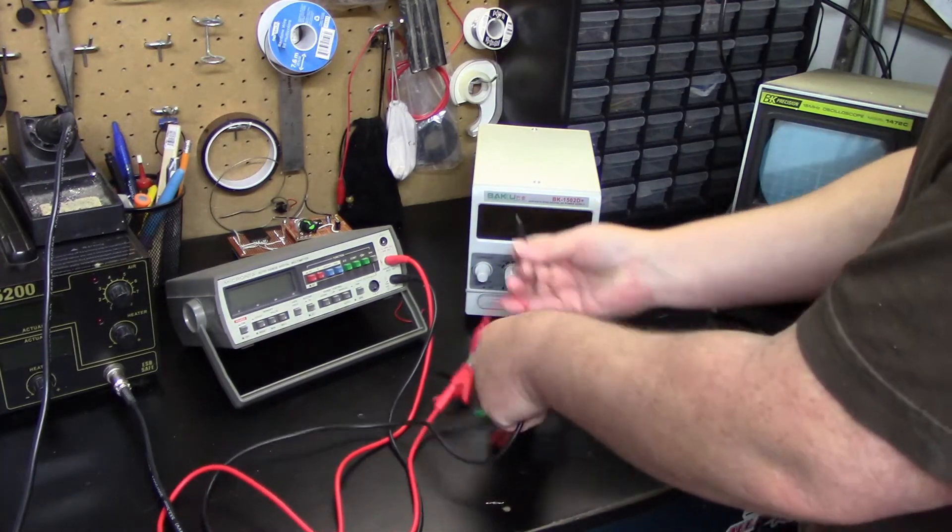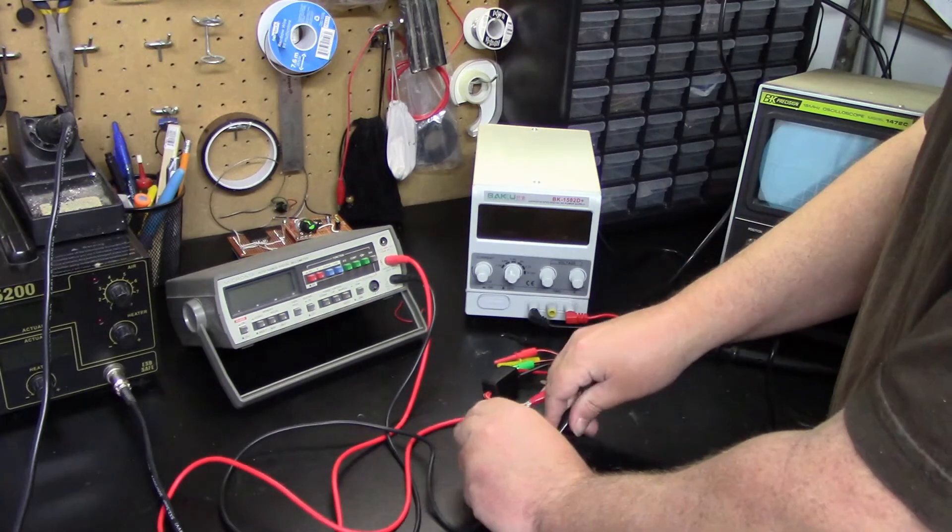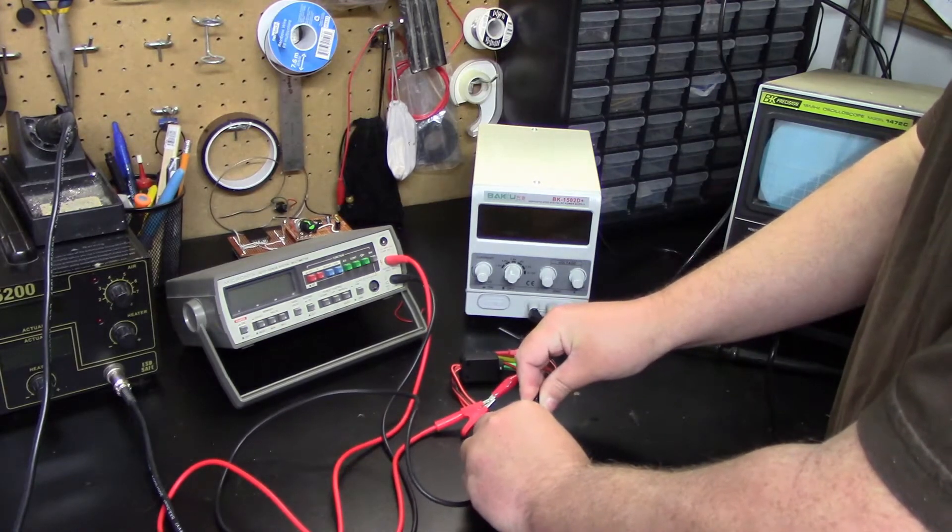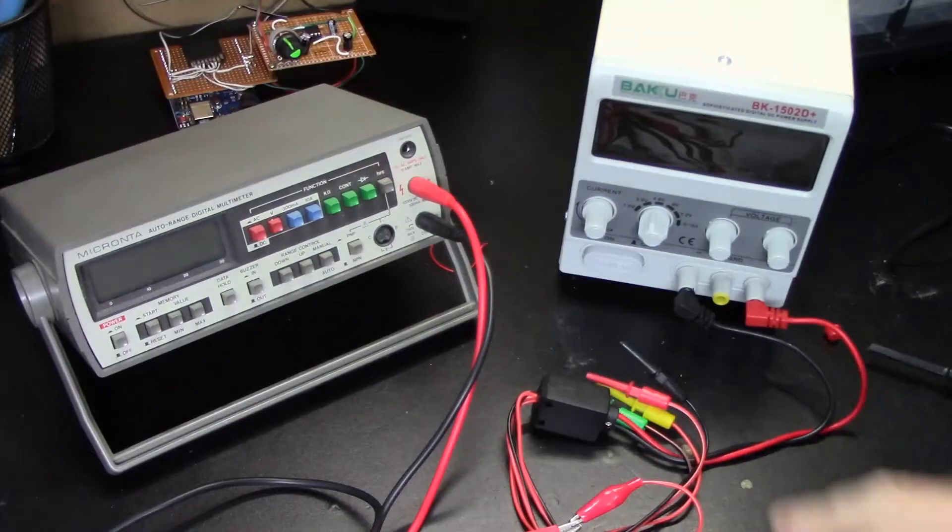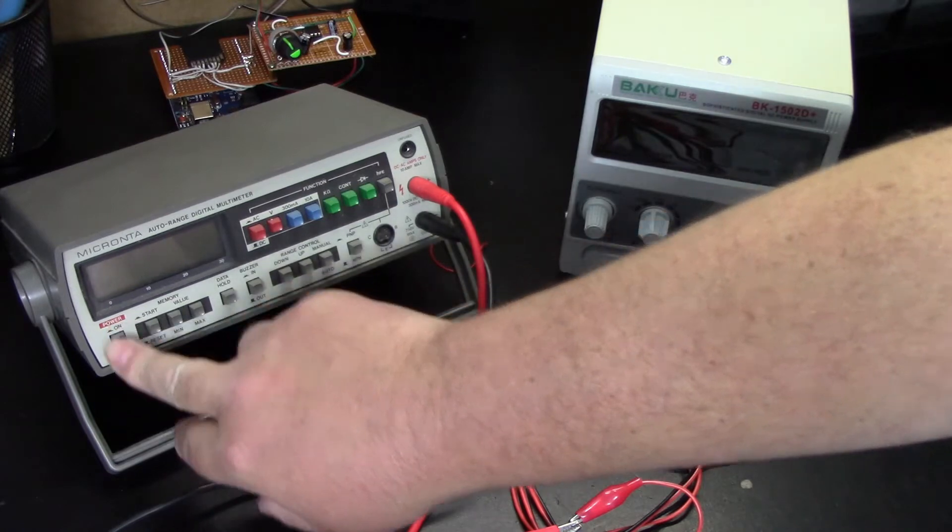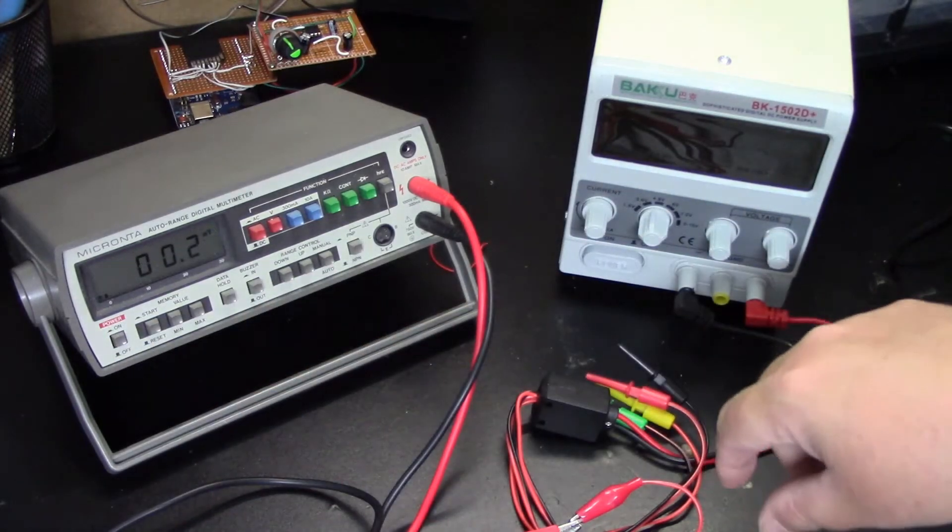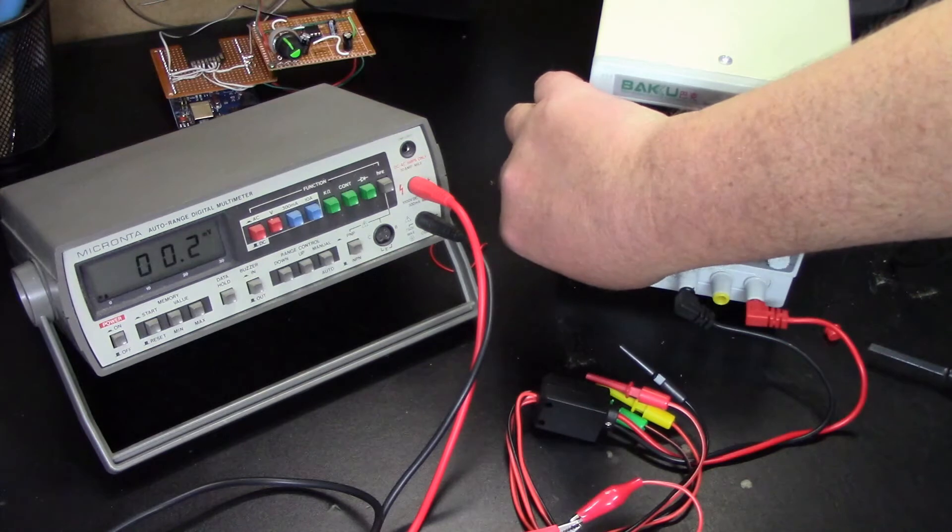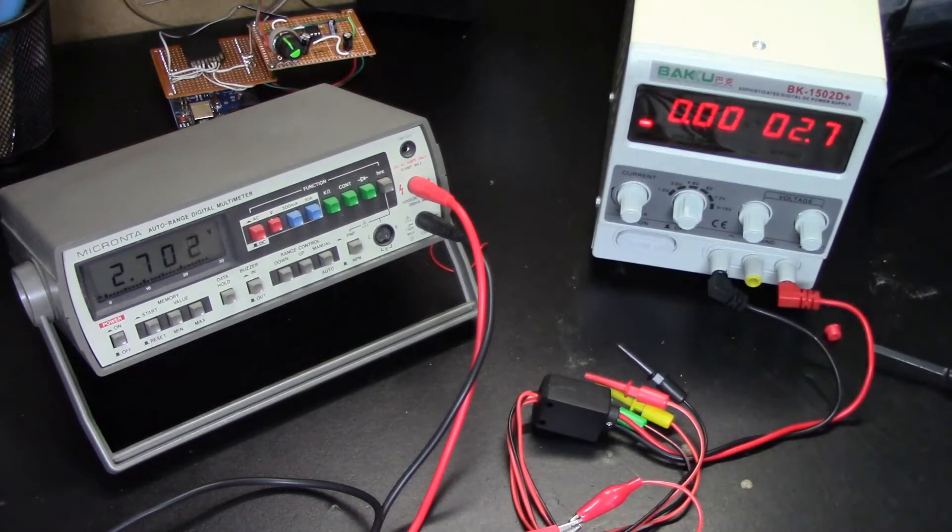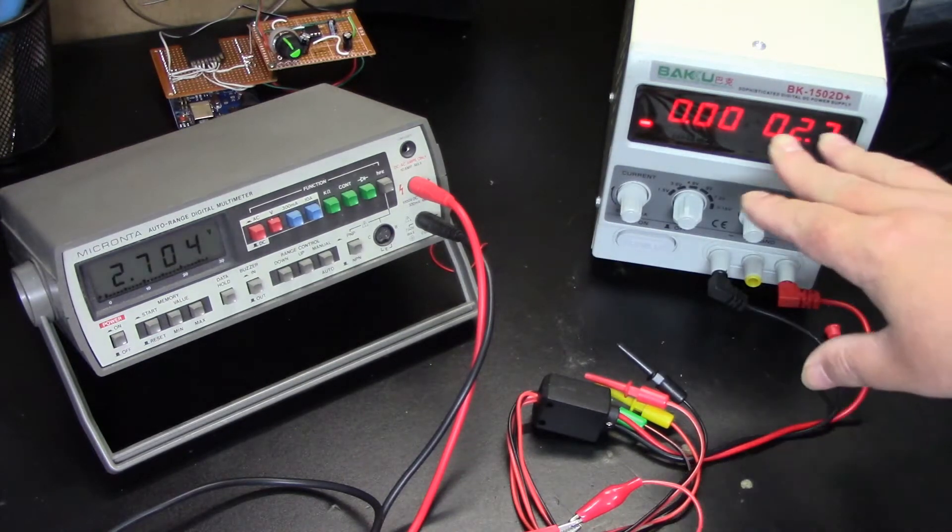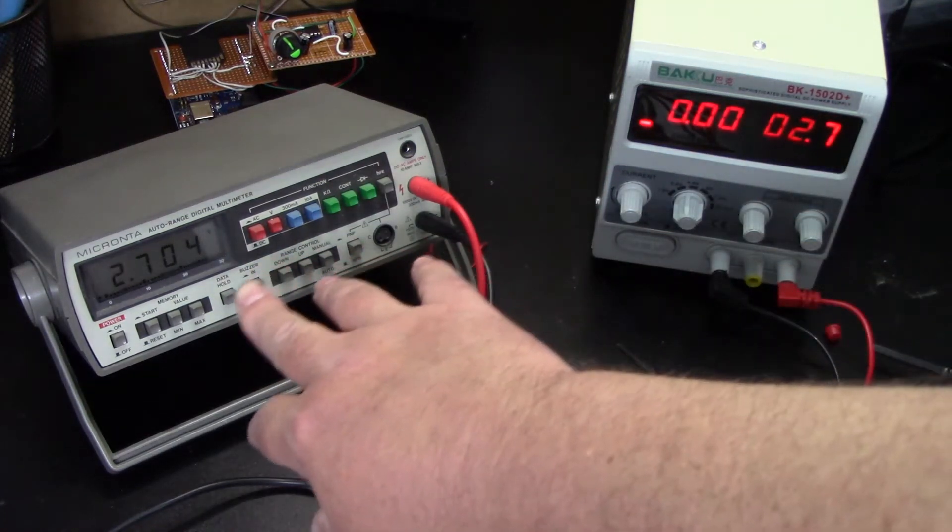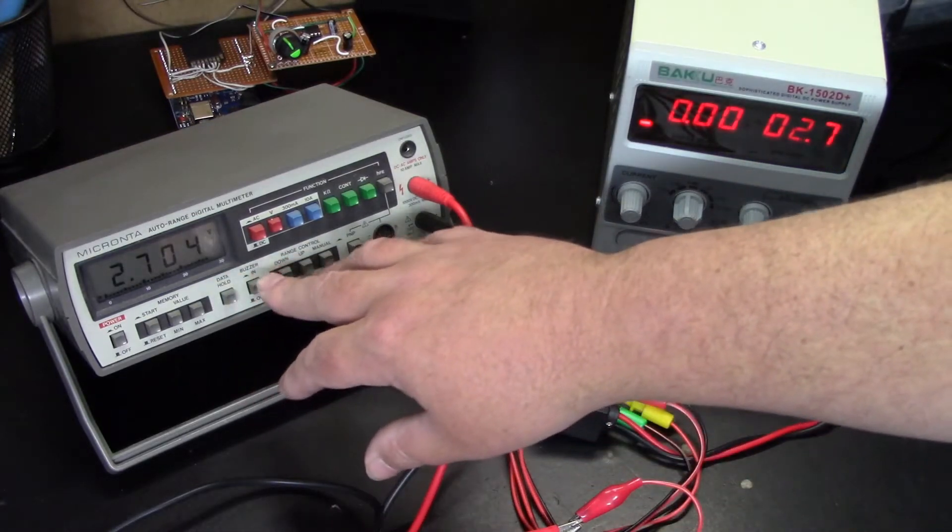For the moment of truth, I'm going to go ahead and turn it on and get the multimeter going here. So that's sitting at 2.7 volts. And on my multimeter here, it is sitting at 2.7045.